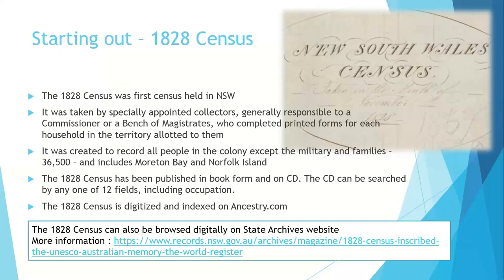We're going to start with the 1828 census. It was created to record all the people in the colony except for the military and their families. Appointed collectors went around and got information from each household. There are 36,500 people and it includes both Moreton Bay and Norfolk Island. The 1828 census has been published in various formats — a book and a CD. The CD can be searched by any one of 12 fields, one of which is occupation. It's also digitised and indexed on Ancestry.com and can be browsed digitally on our website.